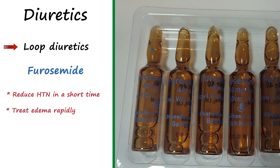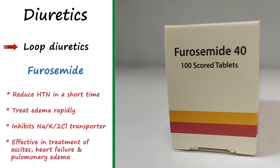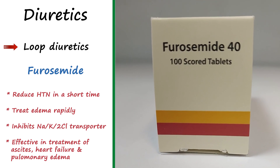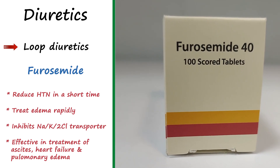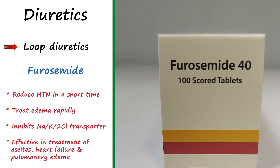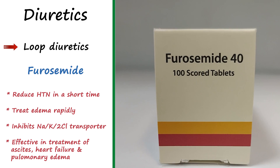The exact mechanism of loop diuretics is inhibition of the sodium-potassium-chloride transporter. By inhibiting this transporter, sodium and potassium can no longer be reabsorbed into the cells and will be excreted, with water following. As a result, the body loses salt and water. The important applications of loop diuretics include treatment of severe edema in patients with ascites, heart failure, and pulmonary edema. They are also used to treat hypertension, usually when patients do not respond adequately to other medications.